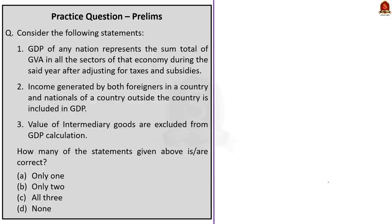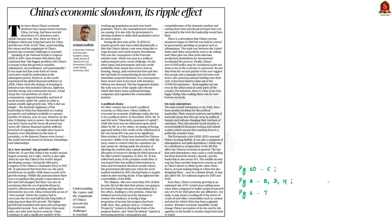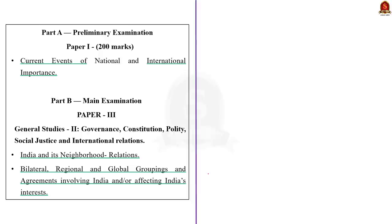Now let us take up the next editorial article, which talks about China's economic slowdown and its impact. The article tries to explain various causes that have led to the present-day economic challenges in China. The problems in the Chinese economy started way back in 2007 when the then Chinese premier highlighted various issues.